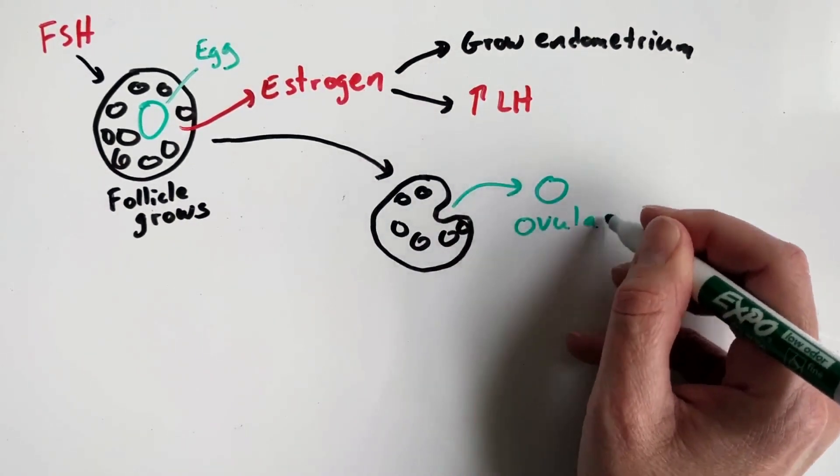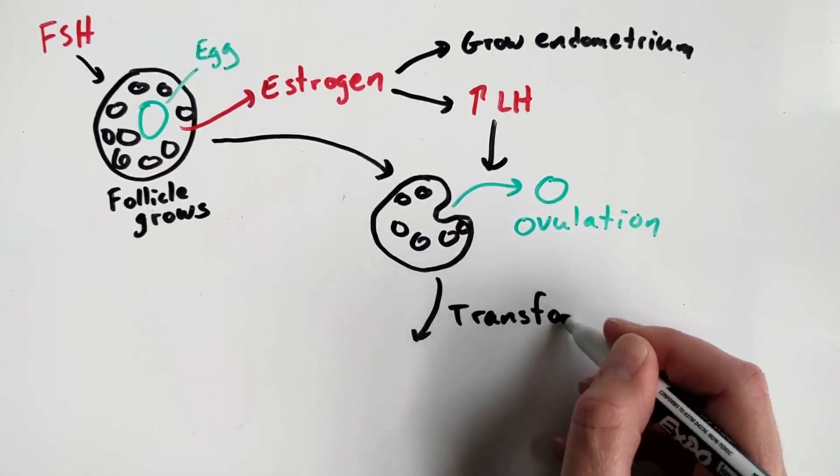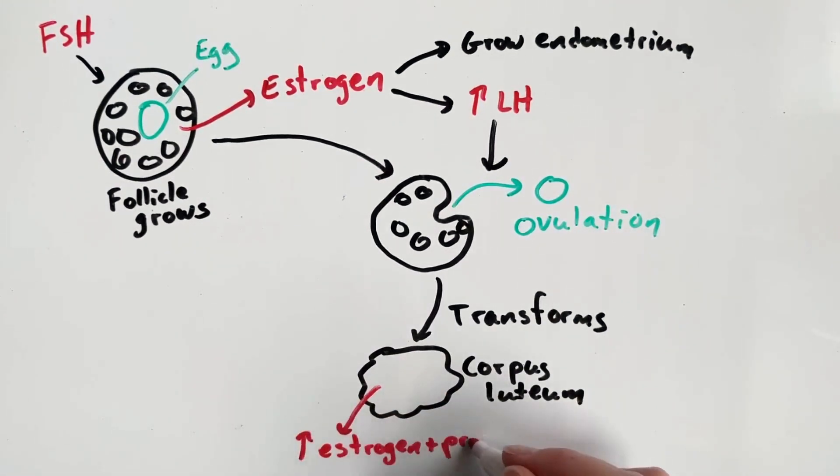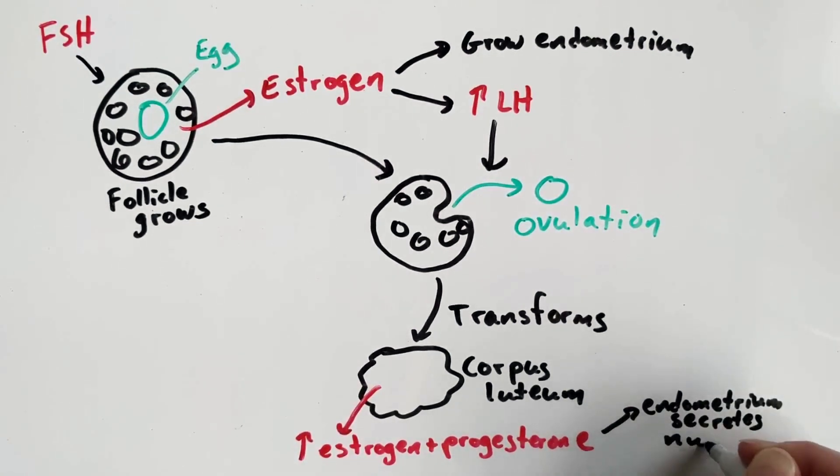Once the egg is released, the remaining follicle transforms into the corpus luteum, which releases estrogen and progesterone. These hormones tell the endometrium to secrete nutrients in anticipation of embryo implantation.